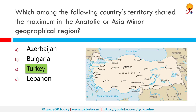Anatolia, which is most of modern Turkey, is divided into six distinct regions including the Aegean, Black Sea, Mediterranean, Central Anatolia, Eastern Anatolia and Southeastern Anatolia regions. The Marmara region is towards the European part of Turkey.